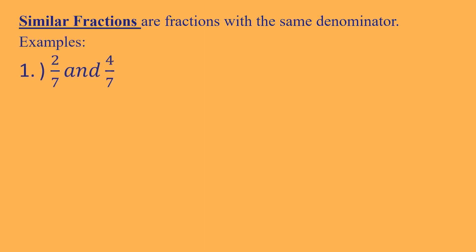But before we start with our main lesson, let us first try to differentiate similar and dissimilar fractions. So if we say similar fractions, these are fractions with the same denominator like 2 over 7 and 4 over 7. They are similar because they have the same denominator which is 7. Another example of similar fractions are 5 over 12 and 3 over 12. They are said to be similar because they have the same denominator which is 12. So kung pareho ang denominator ng dalawa o higit pang fractions, they are said to be similar.